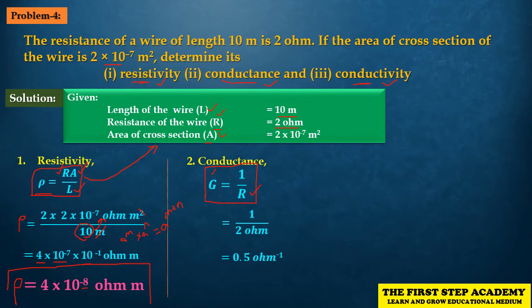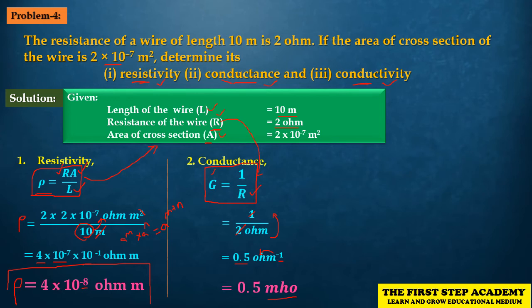Given that resistance of the wire R = 2 Ohm, the conductance G = 1 / 2 Ohm = 0.5 mho. So the conductance value G = 0.5 mho.